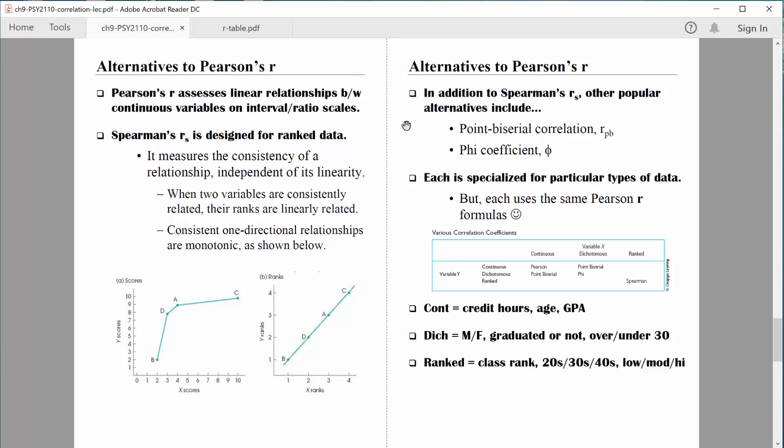In addition to that Spearman's R, there are other popular alternatives to the Pearson correlation coefficient. One is called a point biserial correlation. And the symbol that's used there is the R with a PB for point biserial. And another is known as the phi or phi coefficient. Not everybody pronounces that word the same way. It's a Greek word, of course. It's a Greek letter. I was taught to pronounce it phi. I know a lot of people pronounce it phi. It doesn't matter either way. This is the symbol for it. But this table might help you understand when we would use these alternatives.